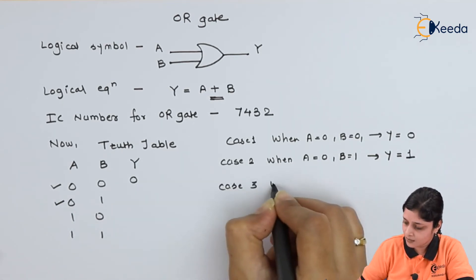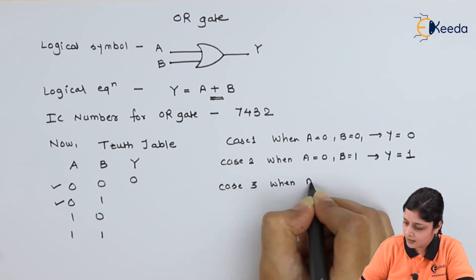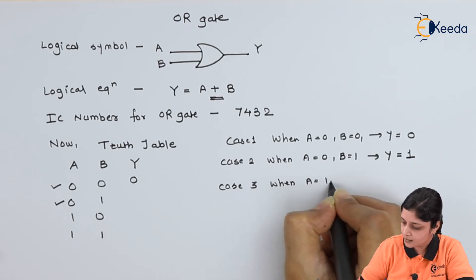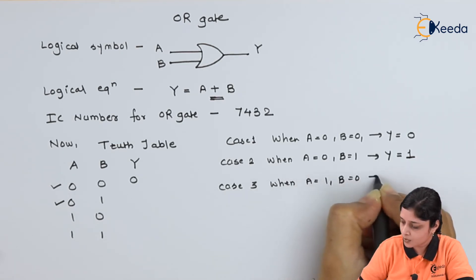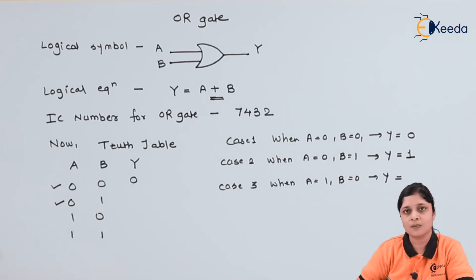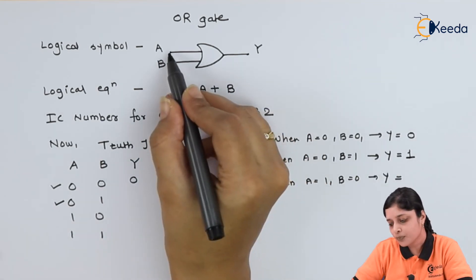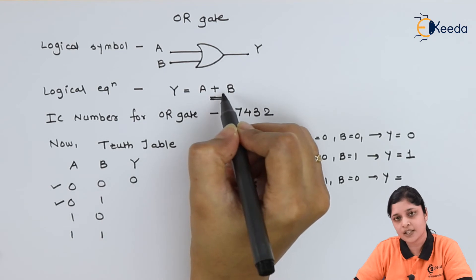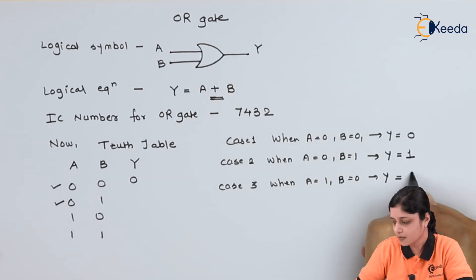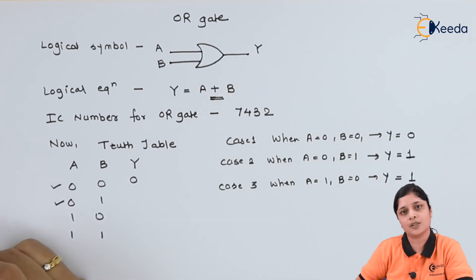Case 3: when A equals to 1, B equals to 0, you will get Y equals to 1. If you put 1 and 0, logical addition will give you 1.